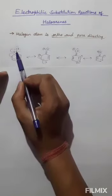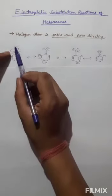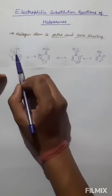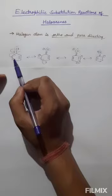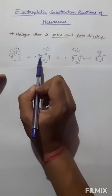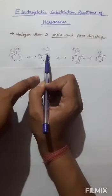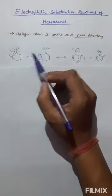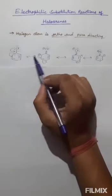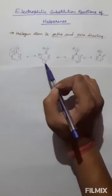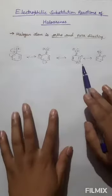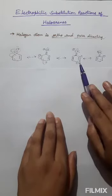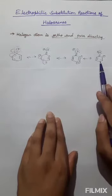In chlorobenzene, the chlorine atom attached to the ring has three lone pairs of electrons. These electrons move into the ring, and the electrons on the ring come out in the form of a negative charge. After the movement of the chlorine electrons, there is a double bond and a positive charge on the chlorine atom, plus a negative charge due to the ring electrons. Delocalization of pi electrons then forms a new resonating structure.